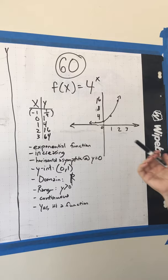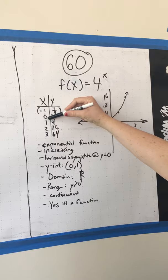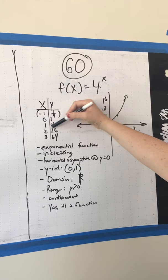So I started out by making a table, and I just plugged in some x values into this equation. For example, if you plug in 0, you get 1, because anything to the power of 0 is 1. And then 4 squared is 16.